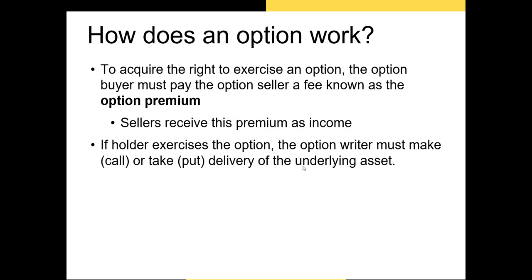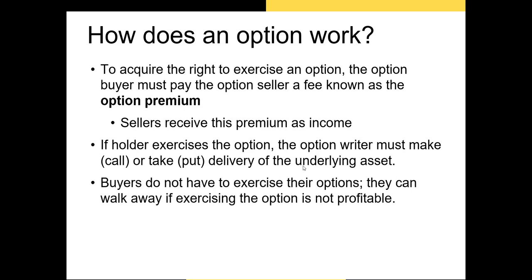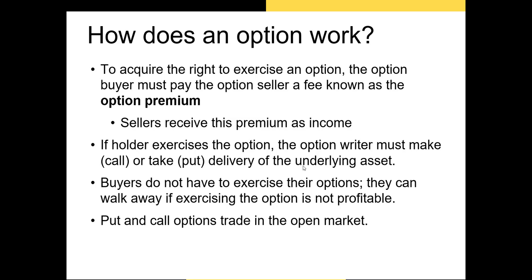If you pay a premium to buy an option that allows you to buy shares of an underlying security, the seller of the option has to sell you their shares if you exercise that option. This means they need to either have cash on hand or own the underlying shares. Also keep in mind that the only reason to exercise an option is if it benefits you. If there's no benefit by the expiration date, as the buyer you won't exercise it — we say that the option expires.